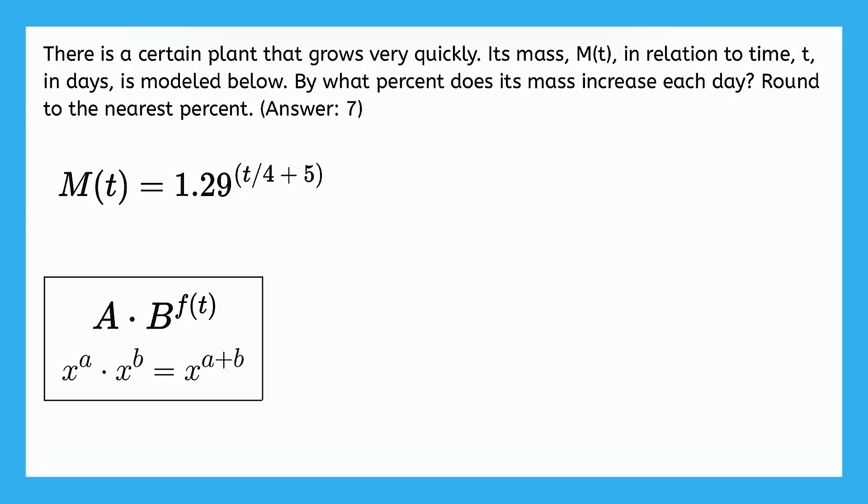because we're going to get a really long decimal as our percent originally. And the answer we should get is going to be 7% when we round to the nearest percent. So in order to be able to interpret this function right here, let's convert it using this property of rational exponents to this form right here.